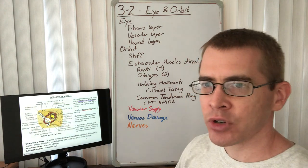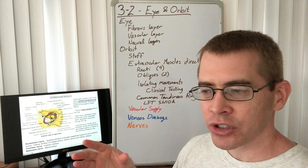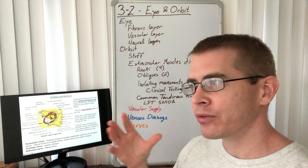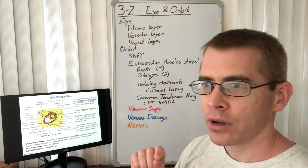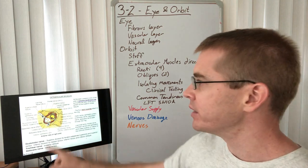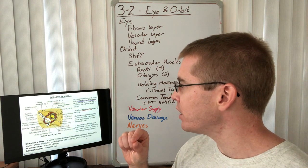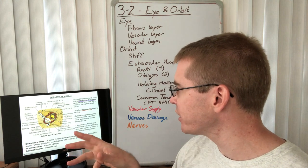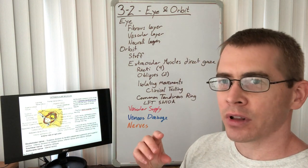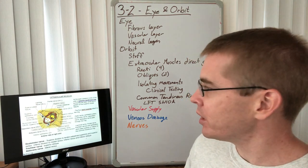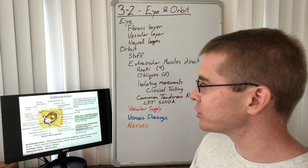There are acronyms for remembering which structures travel inside versus outside the common tendinous ring. One student's mnemonic referenced French toast: lacrimal nerve, frontal nerve, and trochlear nerve are outside the ring, while the superior and inferior divisions of the oculomotor nerve, the nasociliary nerve, and the abducens nerve travel inside the ring.